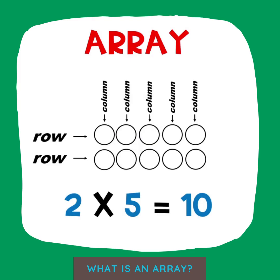We can use an array in multiplication to find the product. We would multiply the number of rows by the number in each row. In this case, two rows of five equals ten.